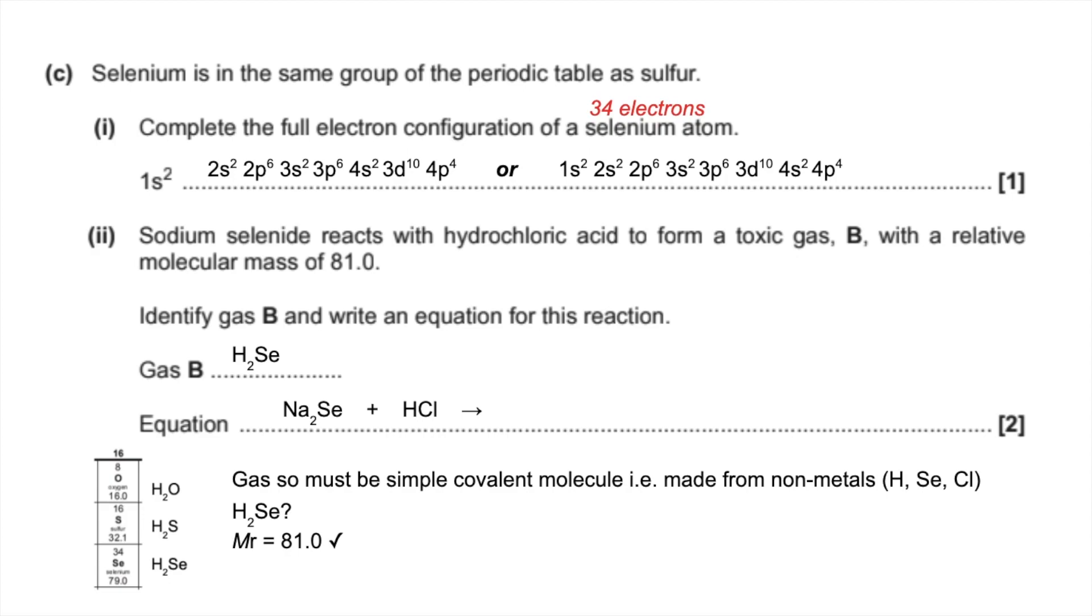So we'll finish off the equation now. So we're going to get H2Se and the leftover atoms are sodium and chlorine. So obviously, the likely thing there is sodium chloride. And we just need to balance it now with 2s in front of the HCl and the NaCl.